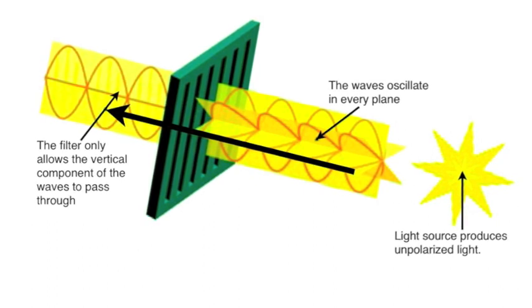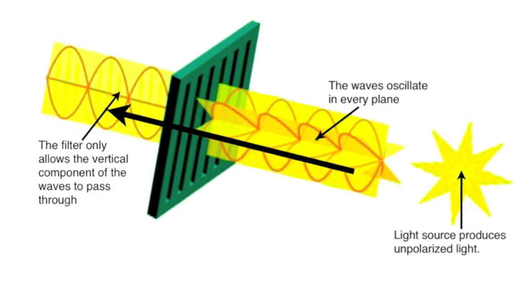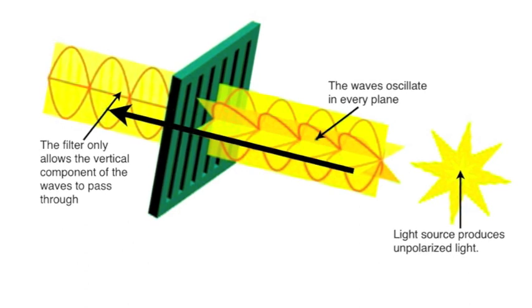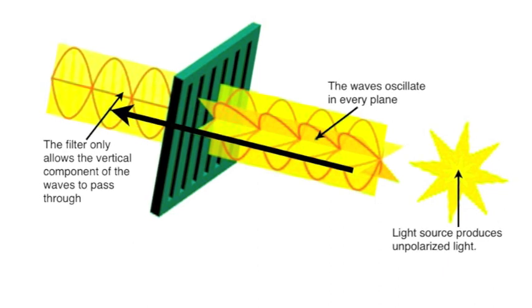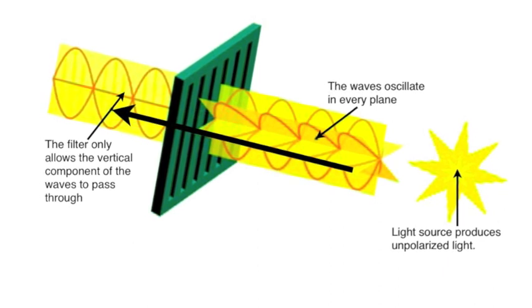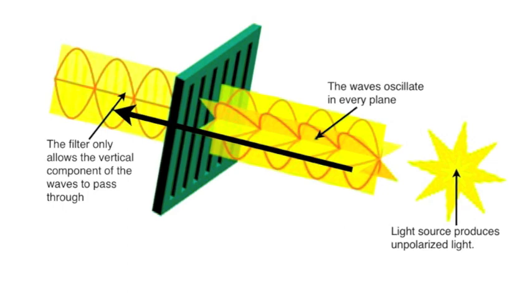The filter can be imagined as railings or a gate, where only the waves that are going up and down the bars can get through. But I should emphasize that is not exactly how it works, but it is how we can imagine it works. It is a useful mental image.